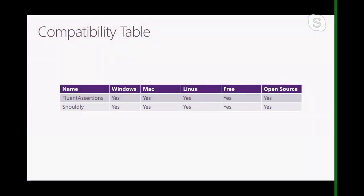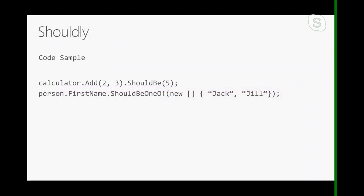Most of these tools differ in the user experience they introduce. Here are two assertion-exclusive testing libraries: Fluent Assertions and Shouldly. Both are cross-platform, both are free to use, and they're also open source.